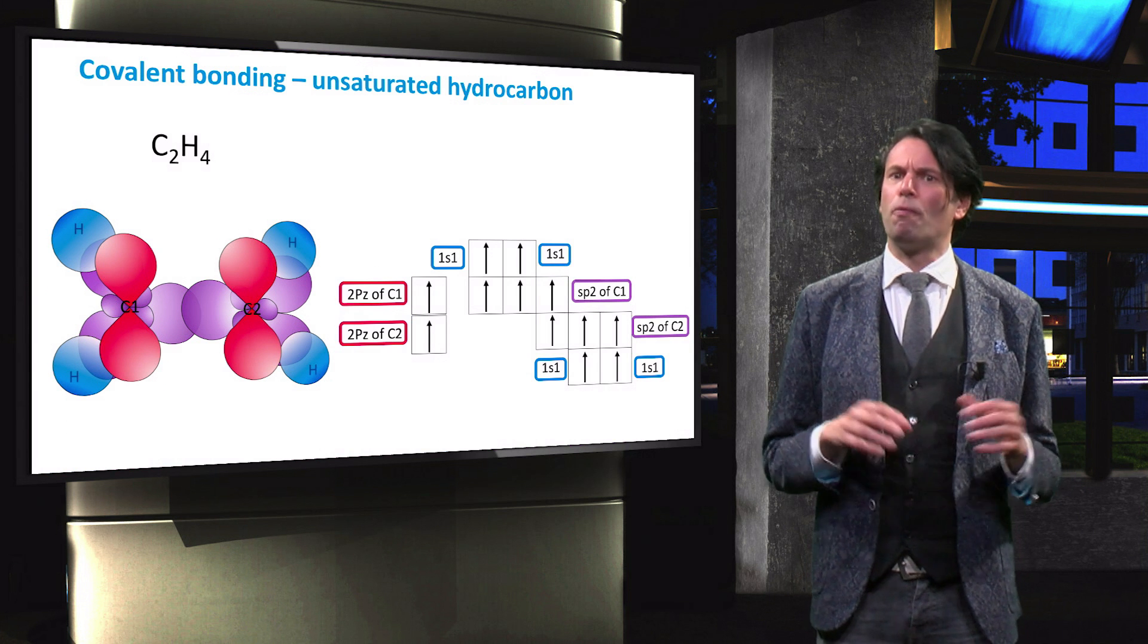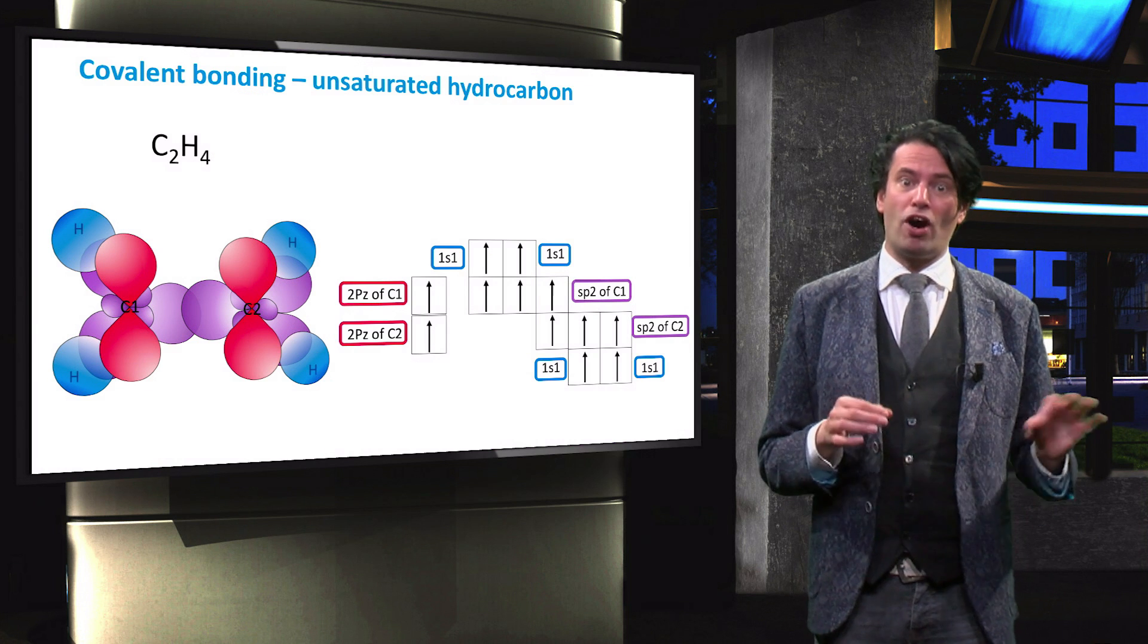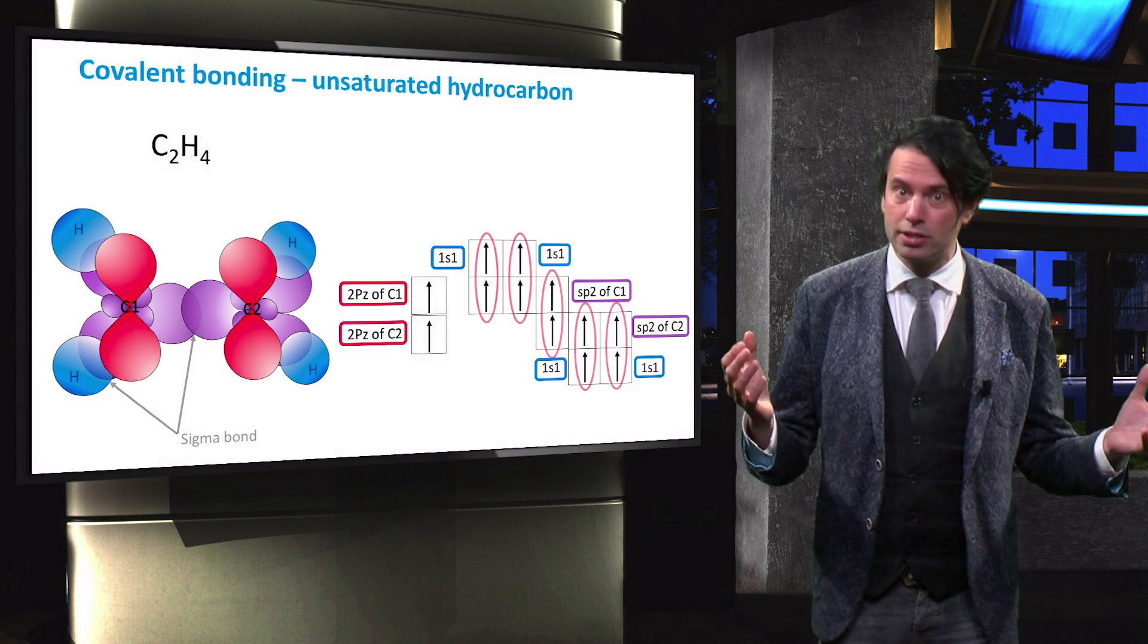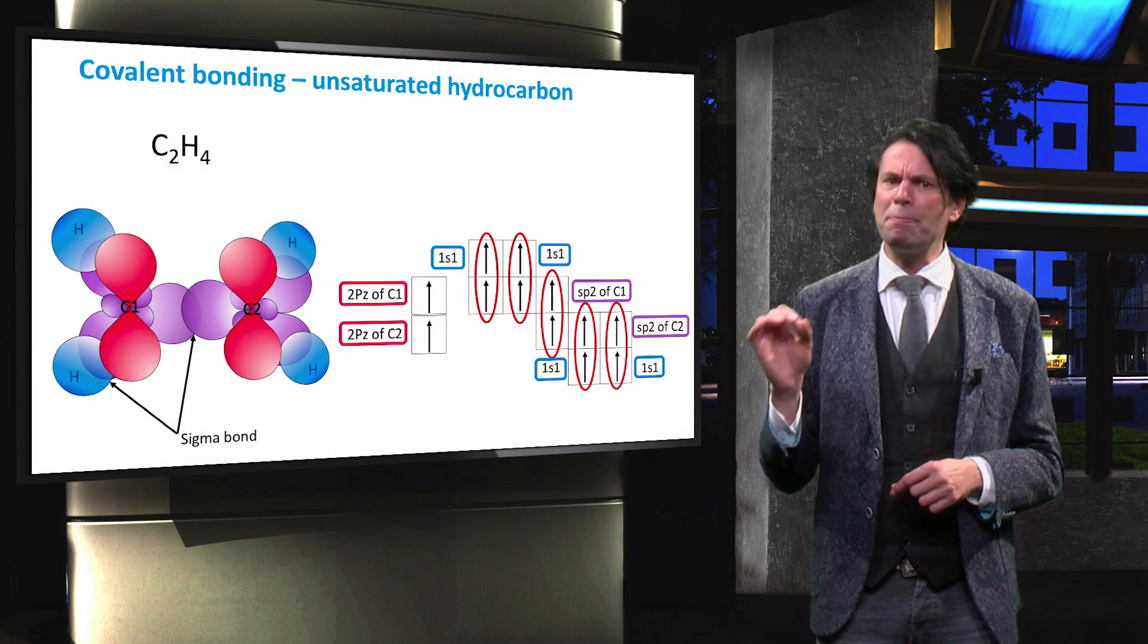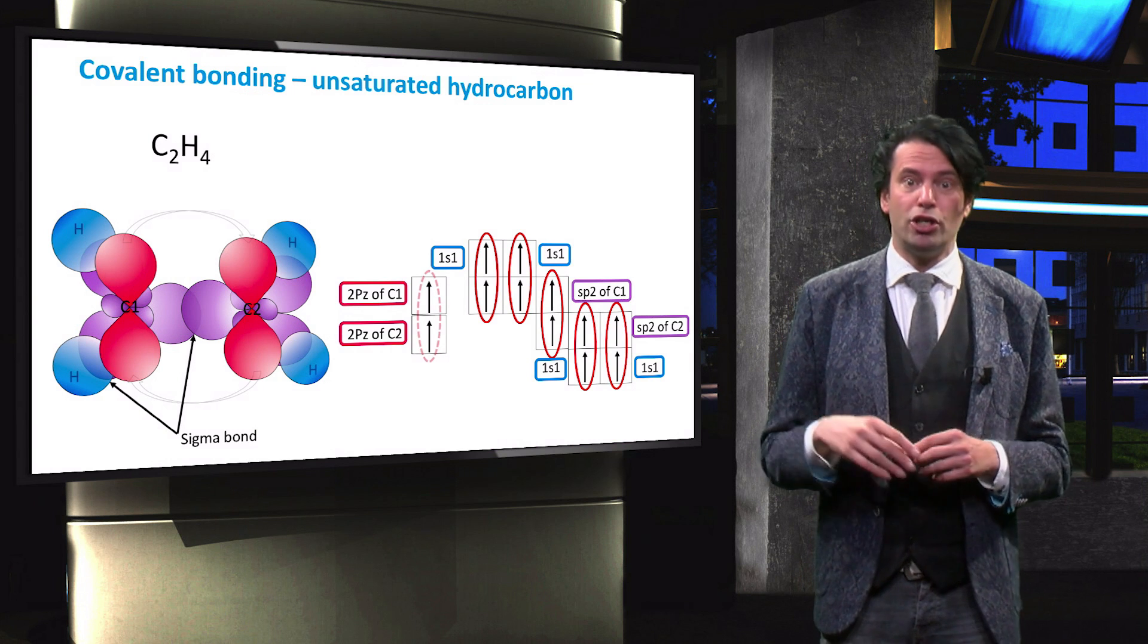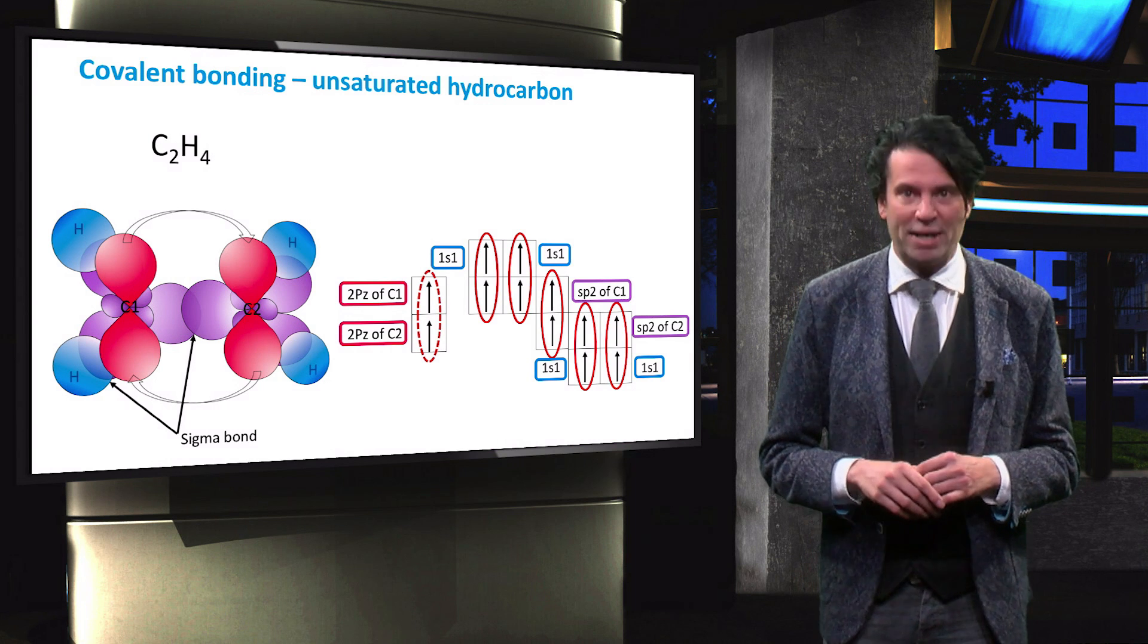This leads to the formation of less than 4 sp hybrid orbitals that can bond with other atoms to form a sigma bond. The empty p orbitals of both carbon atoms bond with each other to form a weaker pi bond.